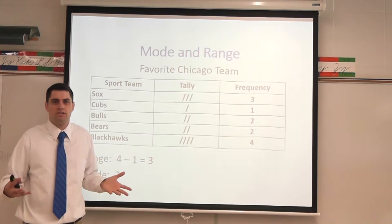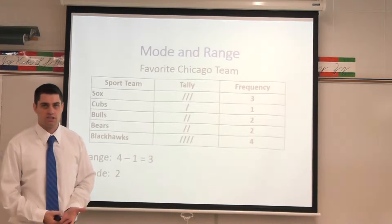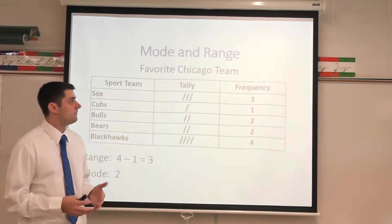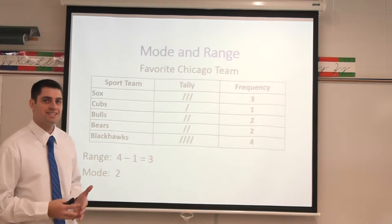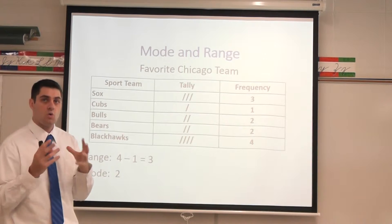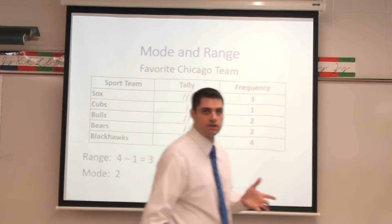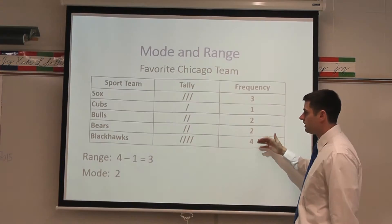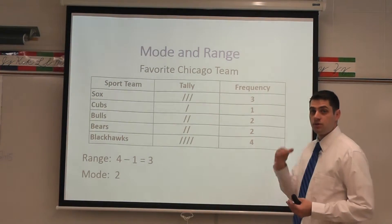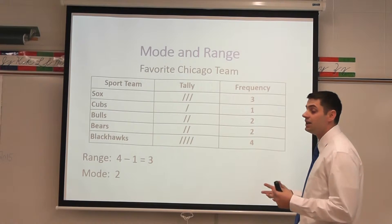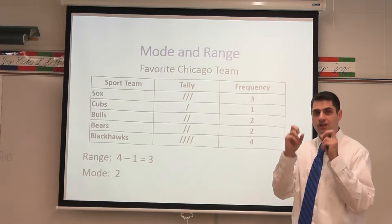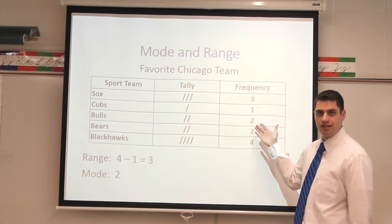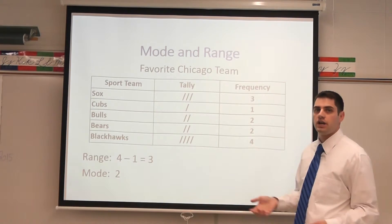Not so bad, but what does the three actually tell us? The three tells you that the numbers in your data set are going to be clustered or close together. Looking at this data set I see 3, 1, 2, 2, and 4 — all those numbers are within three numbers of each other. So if I was looking at this data it would be clustered together. Now you might say, 'I could just look at the data set and see it's pretty easy — why do I need to find range?'